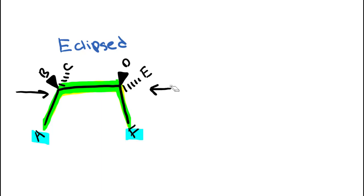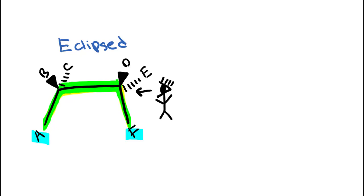Sometimes in the problem, they'll tell you that you're looking down carbons 2 to 3, meaning that your front carbon would have to be carbon number 2 and your back carbon would be carbon number 3. In this case, I'm going to put my eyeball right here — I'll draw my cyclops man looking in this direction. That would make this my front carbon and this my back carbon. Right in front of him we've got a dot which represents the front carbon, and then a big circle in the back to represent the back carbon.